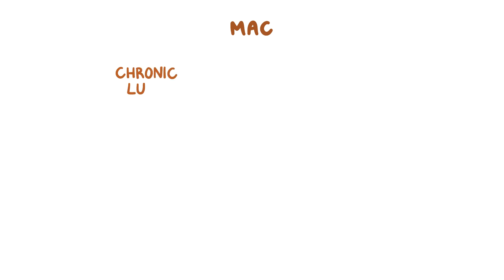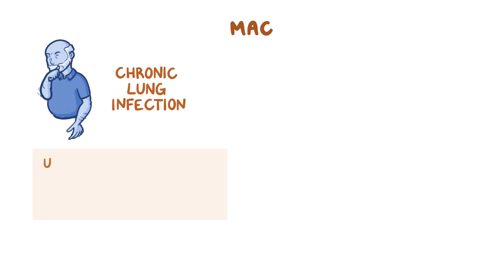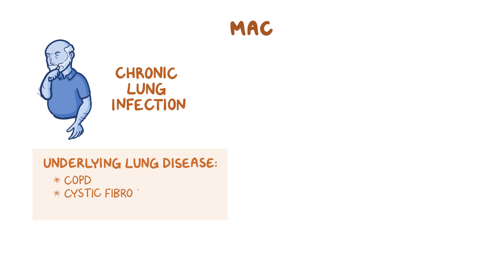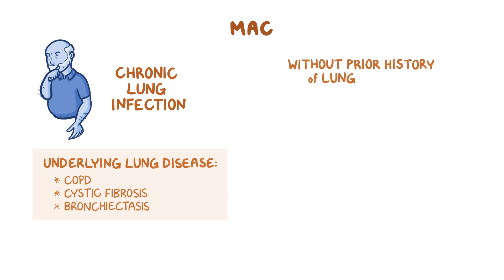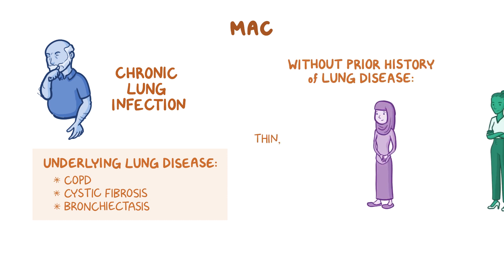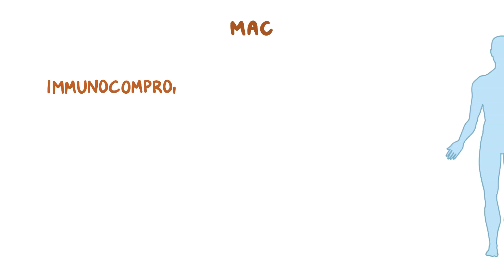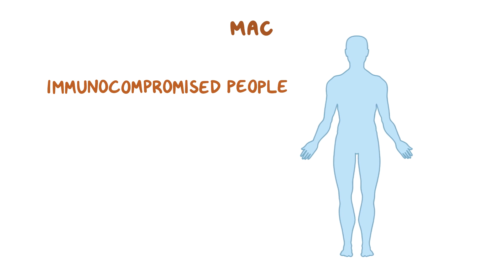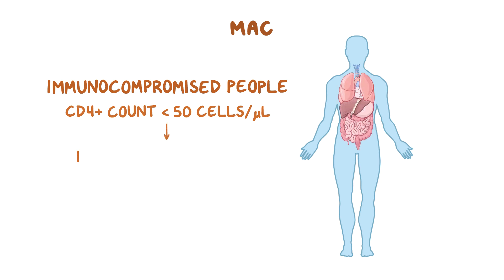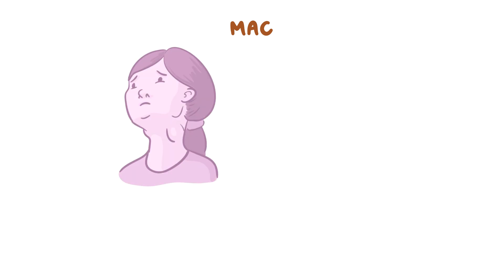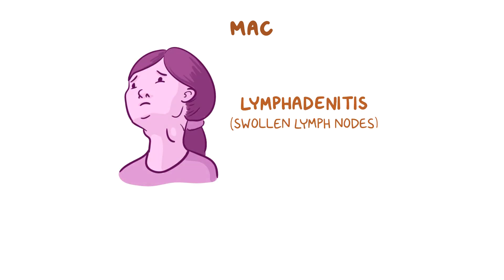MAC usually cause chronic lung infection in people who already have an underlying lung disease, such as chronic obstructive pulmonary disease, cystic fibrosis, or bronchiectasis. They can also affect people without a prior history of lung disease, especially in thin, middle-aged, or elderly females. People who are immunocompromised, like those with AIDS who have a CD4 cell count below 50 cells per microliter, are more likely to develop disseminated infection. In young children, MAC can cause lymphadenitis, or swollen lymph nodes.